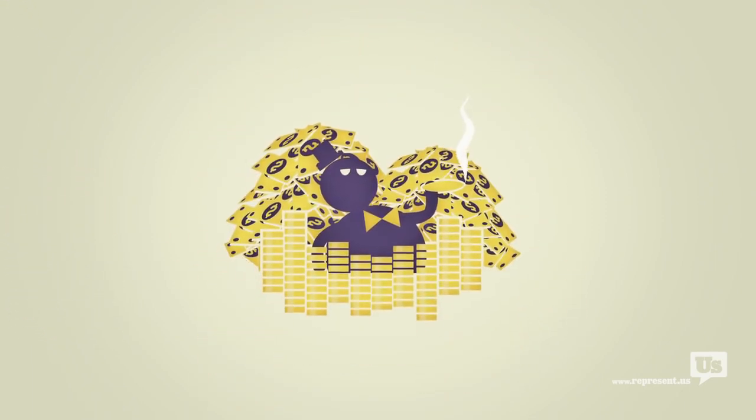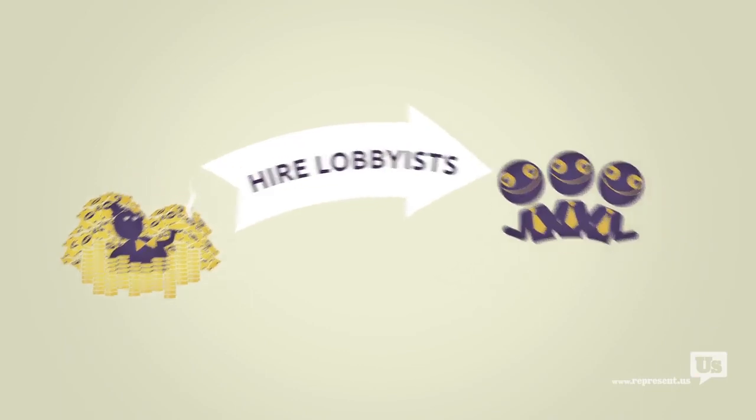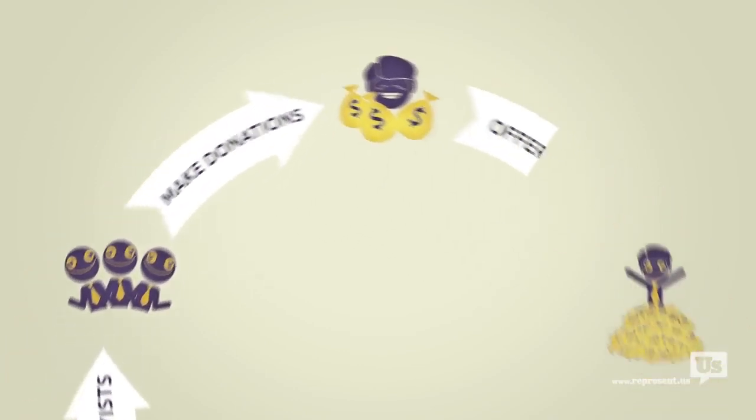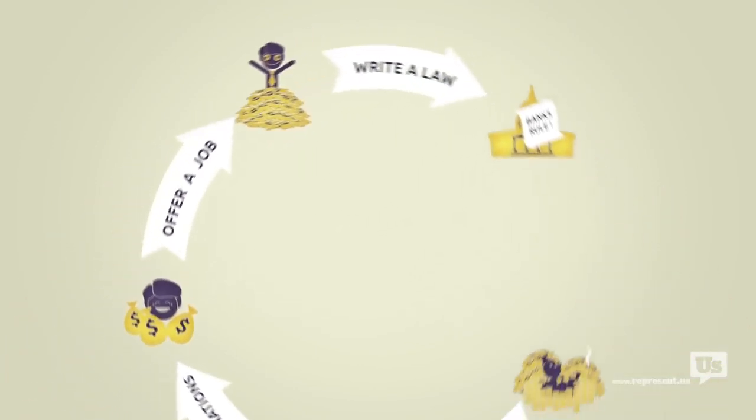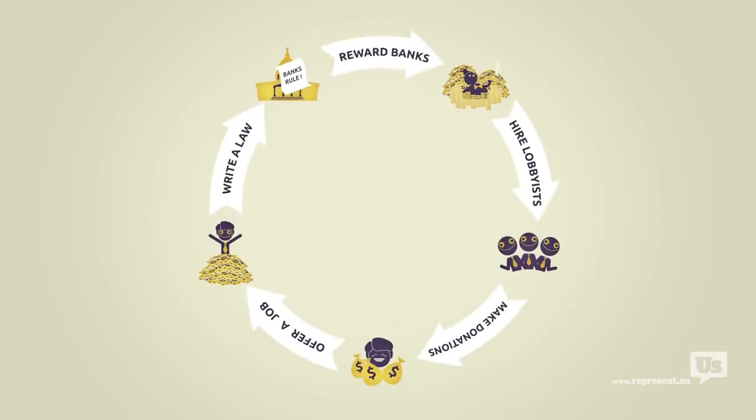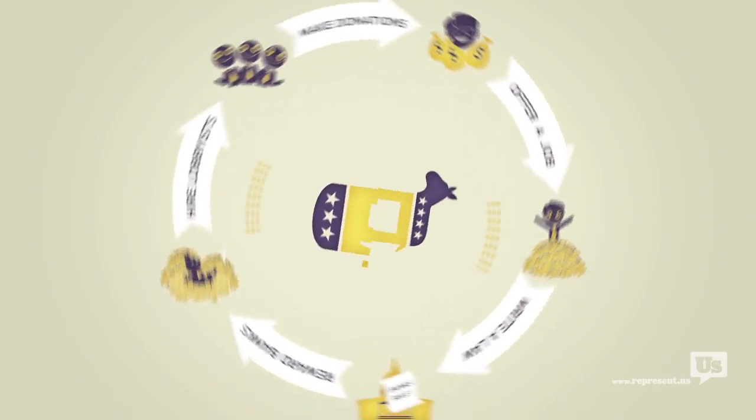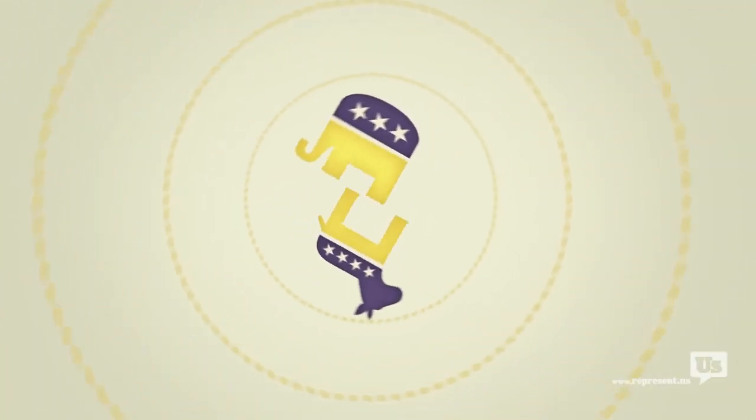This is how a bill becomes a law. A special interest hires some lobbyists. Those lobbyists collect campaign contributions, offer jobs, and then write the laws that Congress then passes to help those same special interests. This happens every day on every single issue with politicians of both parties.